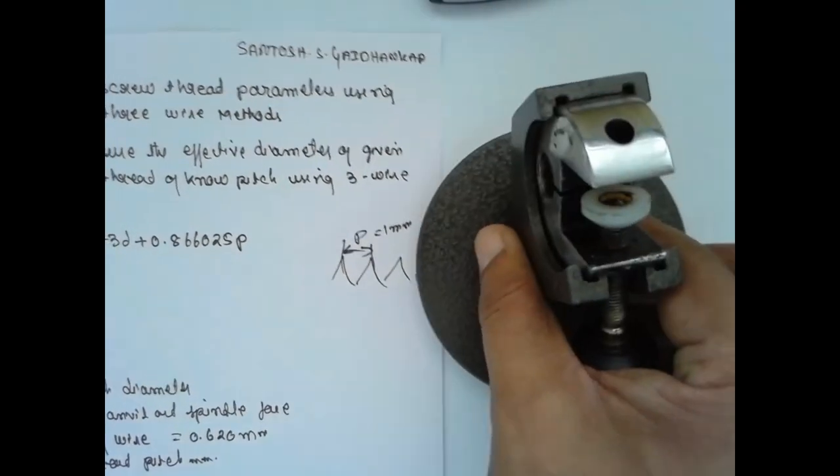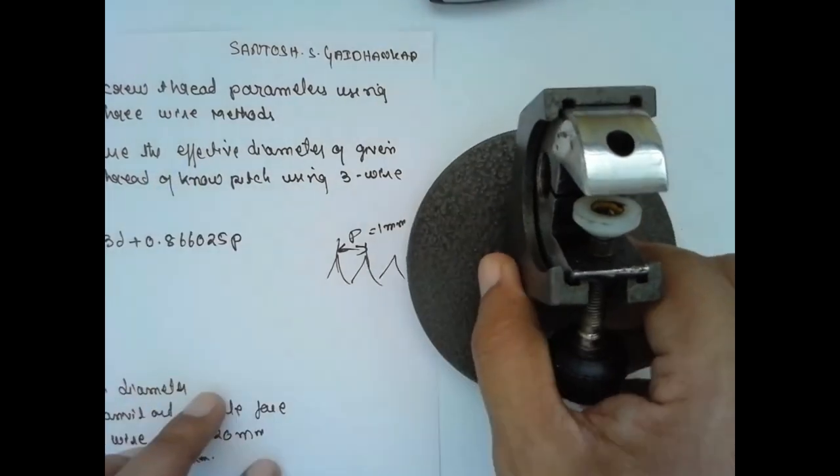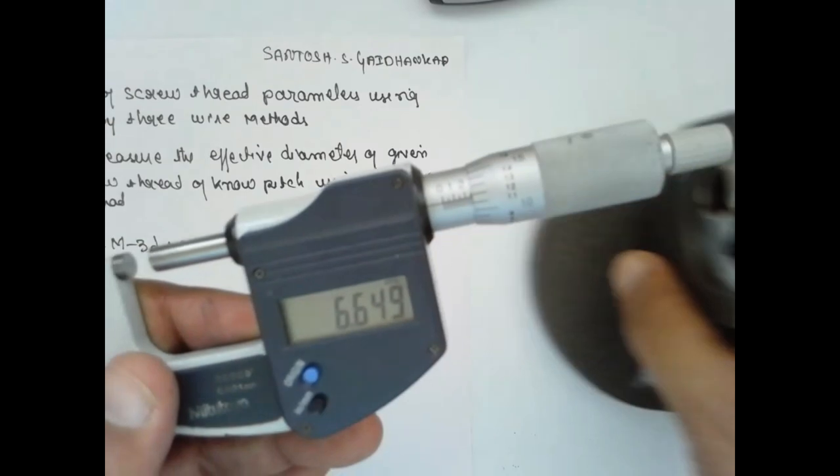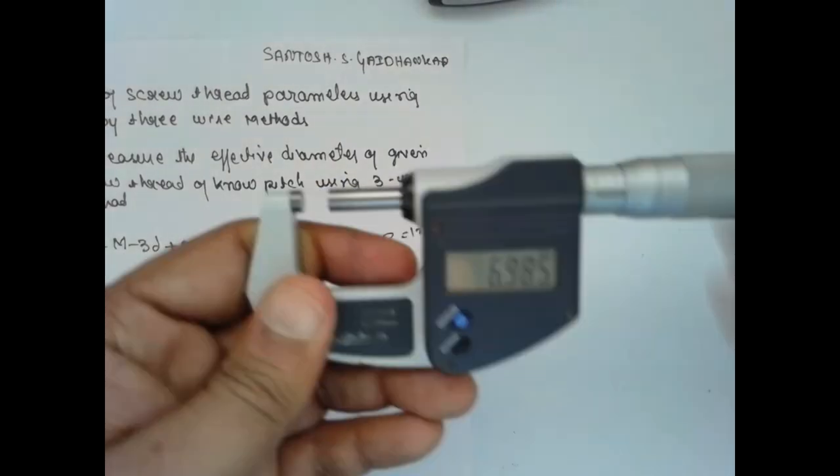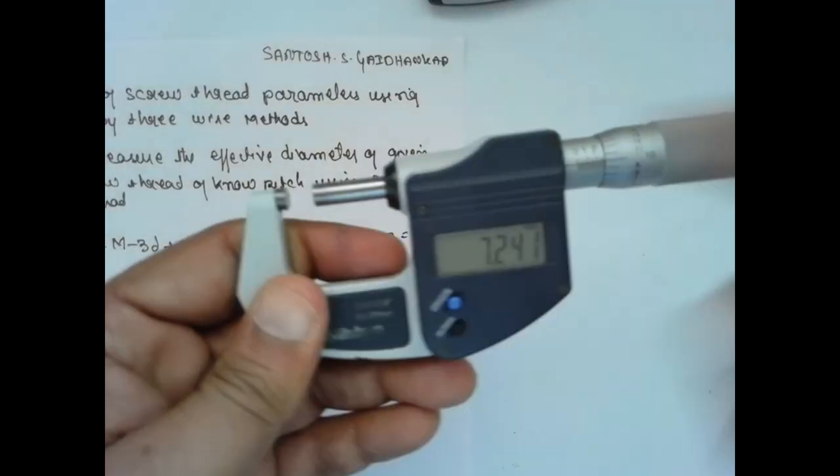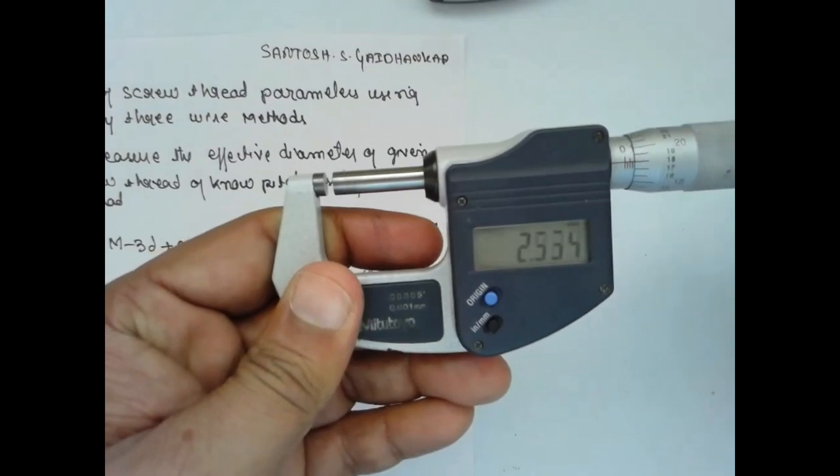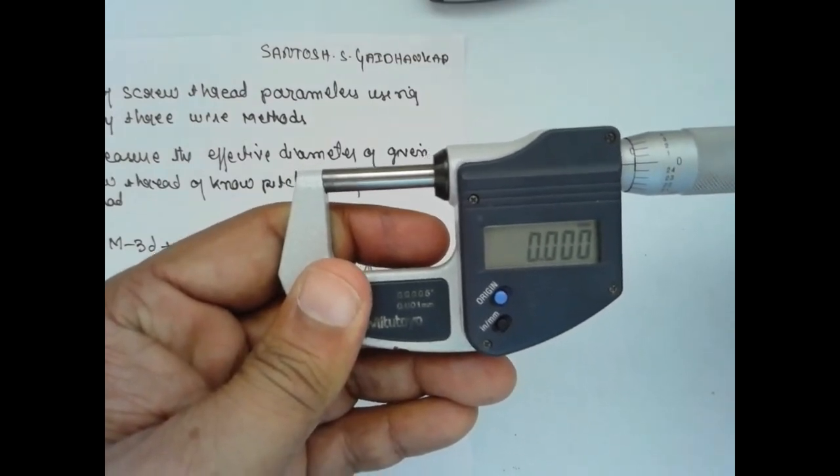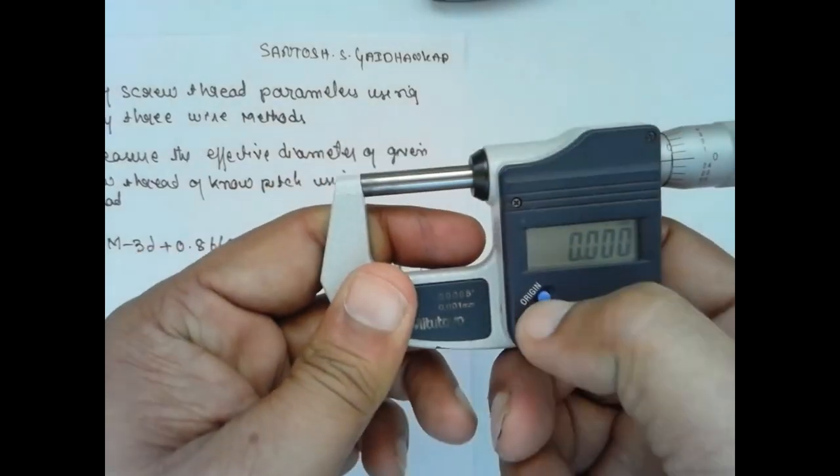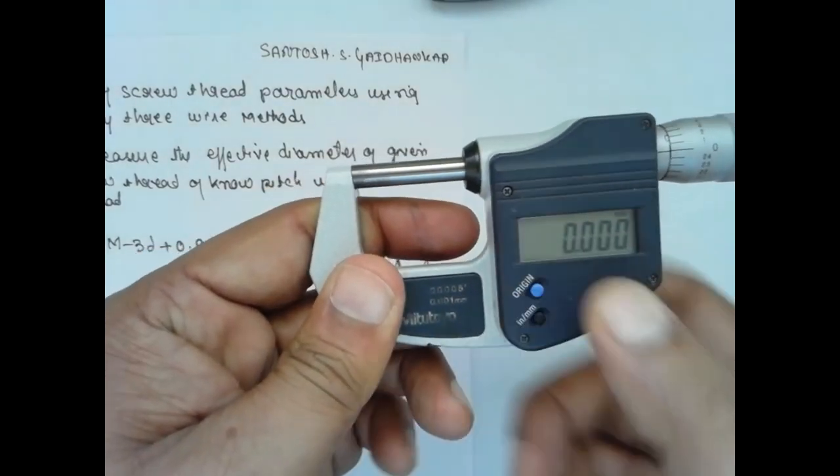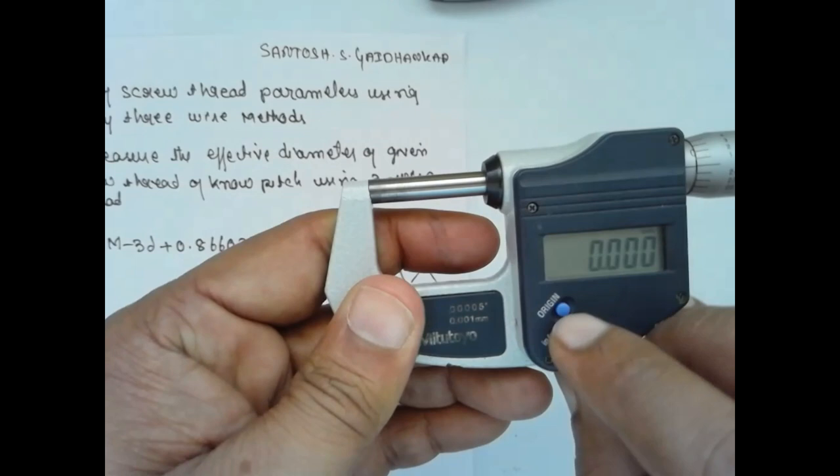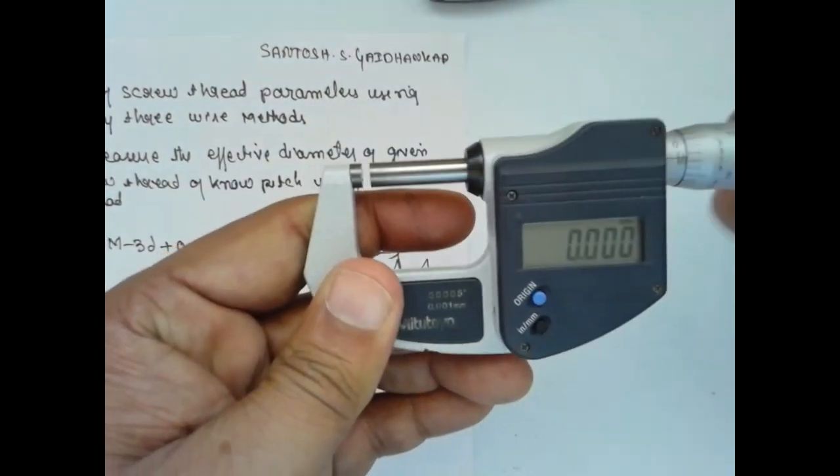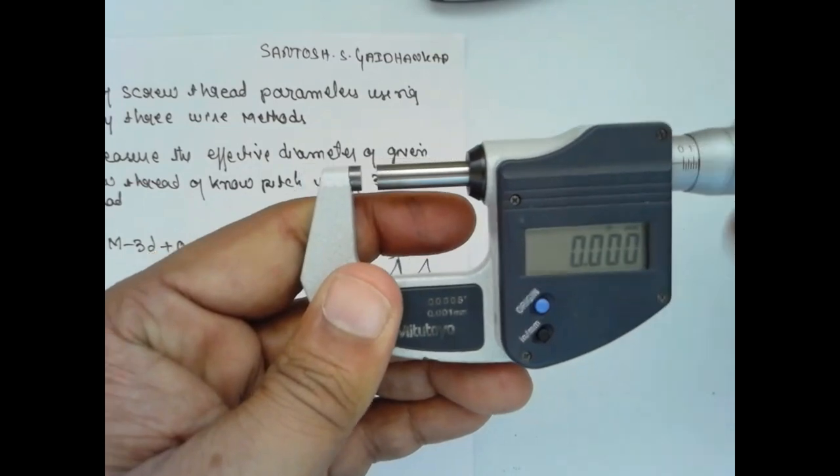This is the floating carriage which is placed over the table. Now we are placing the digital micrometer. Before placing the micrometer, this is the spindle and the anvil. The ratchet mechanism is used. This is the origin. You have to click twice - if you click once it will pause, therefore you have to do it twice.